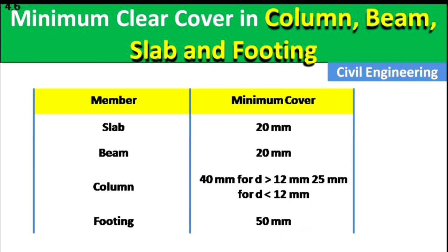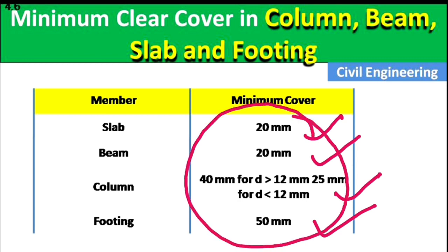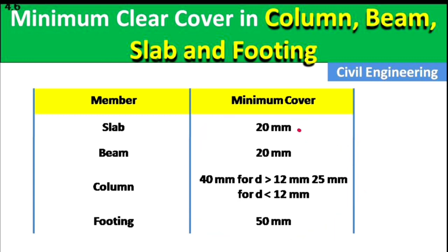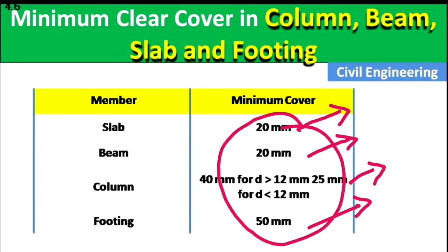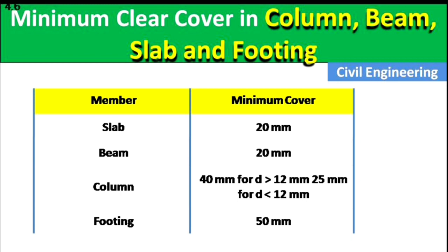For footing, the minimum clear cover is 50 mm. All these values are taken from the IS code and represent the minimum clear cover — you may provide more, but never less than these values. That's all for today. Please like this video and subscribe to my channel for new updates about civil engineering. Thank you.